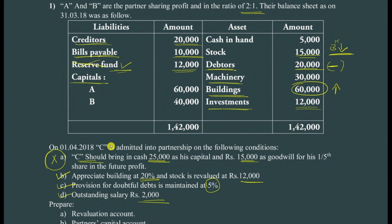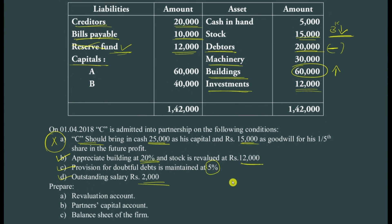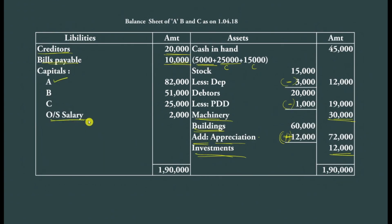The last entry in the balance sheet is outstanding salary of 2,000 rupees on the liability side — it has not been paid yet. Notice that every adjustment item appeared twice: once in the revaluation account and once in the balance sheet. Outstanding salary was entered in the revaluation account but not yet in the balance sheet, so we enter it now. The total balances to 1,90,000. That's how you solve this problem. I hope you understand — hit like and share with your friends. See you in the next video!